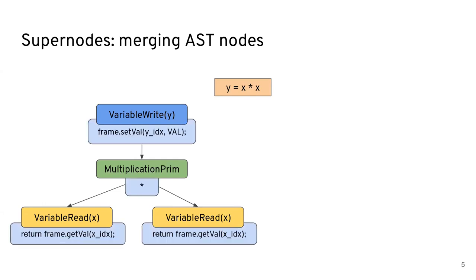So each node has its own behavior encapsulated in a virtual method called execute in this context. The variable write is going to access the frame and set the value of y at its index to the value of the children node. And what the children are going to do is multiply one read of x, getting it from the frame at the index of it, to another one. So right off the bat, we have to read from x twice. So there's some repetition there that can be avoided.